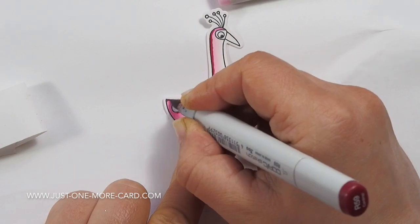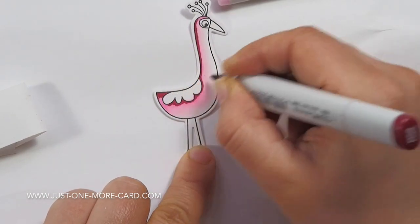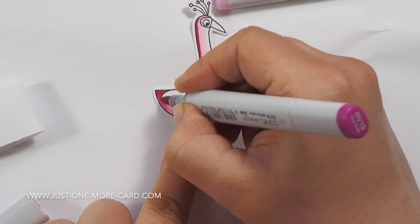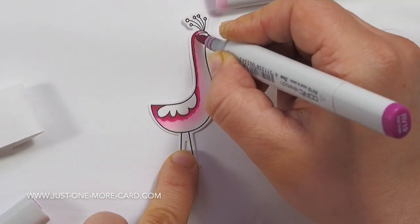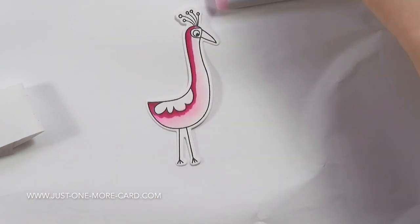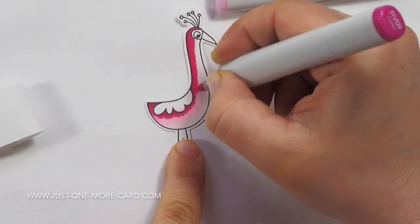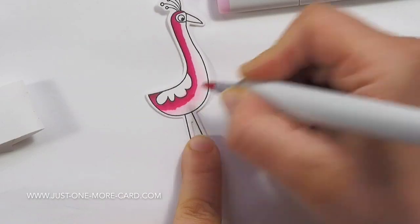So I grabbed a very dark color. I think this is an R59, it's not even a pink color, but I just wanted to have something that's really nice and dark and rich. I'm switching back to an RV, I think this is an RV19 or 18, and then I'm just blending out towards the lighter colors.